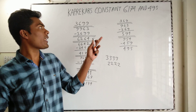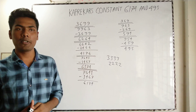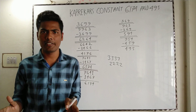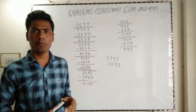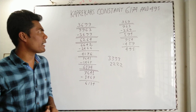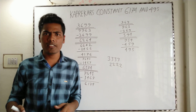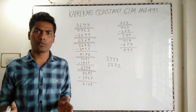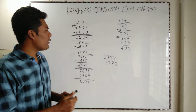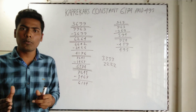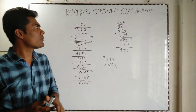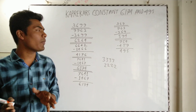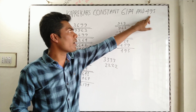Hi everyone, today we are talking about the numbers 6174 and 495. These two numbers are really very interesting, and they are known as the Kaprekar's constant. Kaprekar was an Indian recreational mathematician and school teacher. I will show you how any four-digit number always converges to 6174, and how any three-digit number always converges to 495.